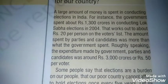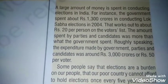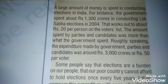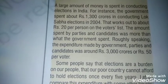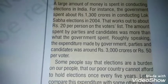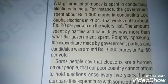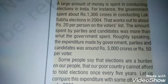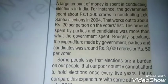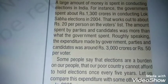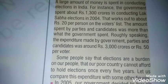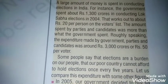The amount spent by parties and candidates was more than what the government spent. Roughly speaking, the total expenditure made by government, parties, and candidates was around rupees 3,000 crore — rupees 50 per voter. Jo amount parties aur candidates lagate hain, usse zyada government lagati hai, aur roughly 3,000 crore tak pahuncha aur per voter 50 rupees hota hai.